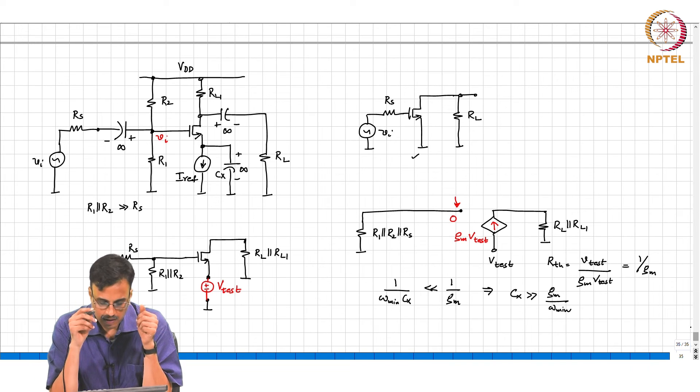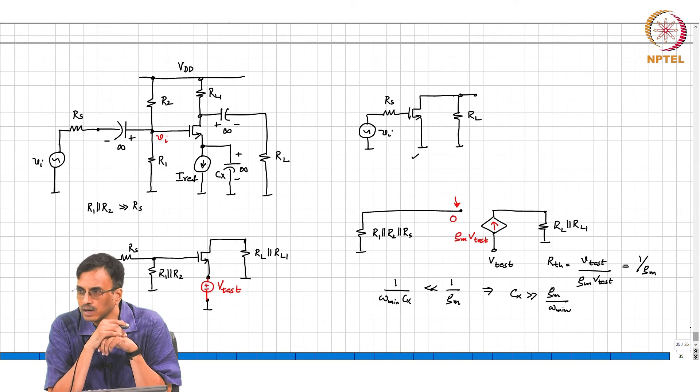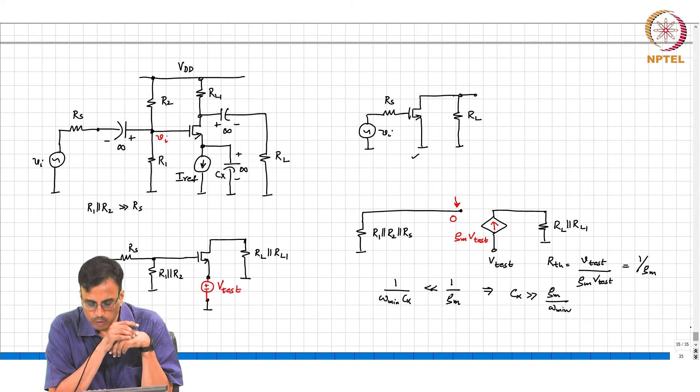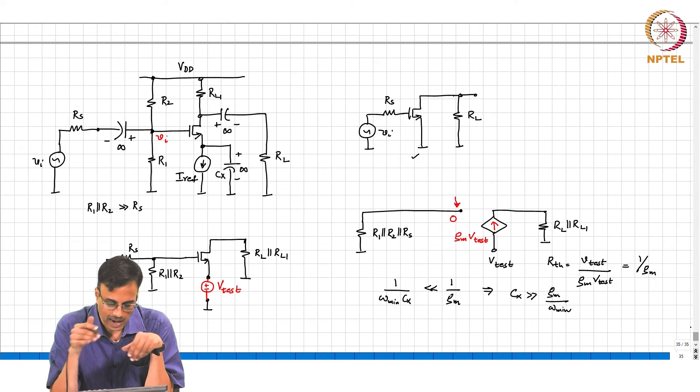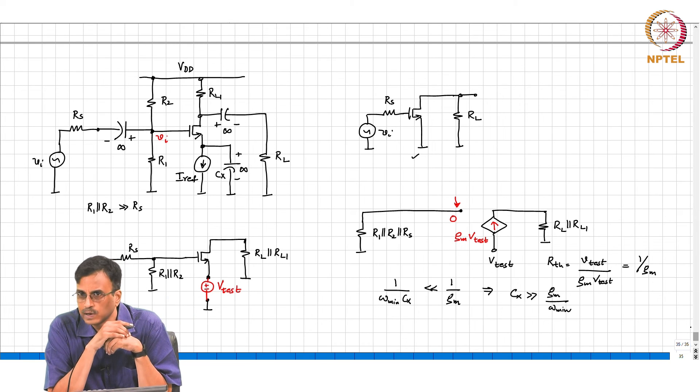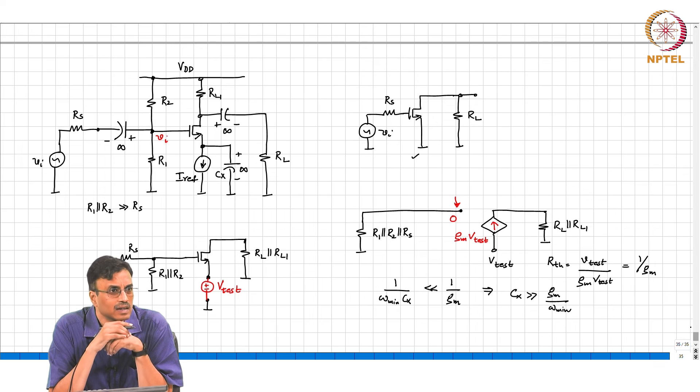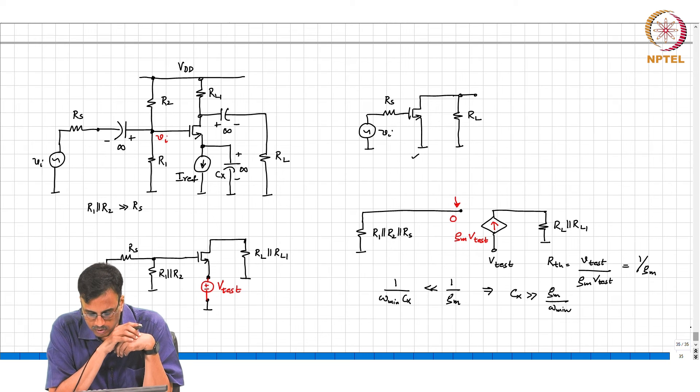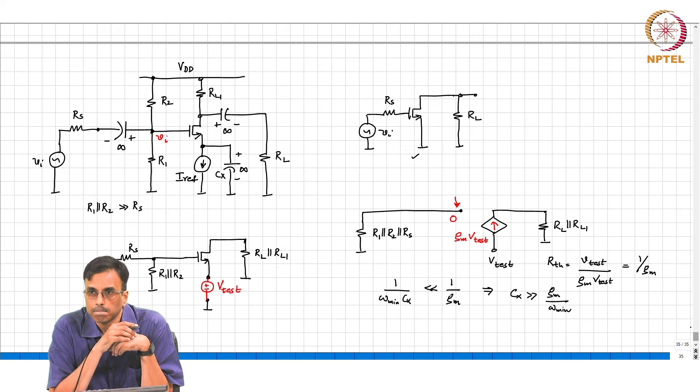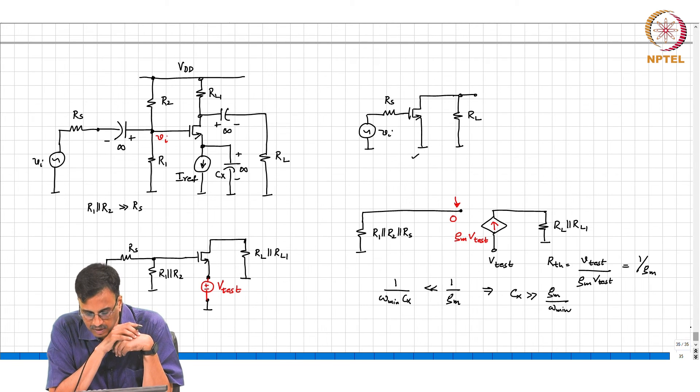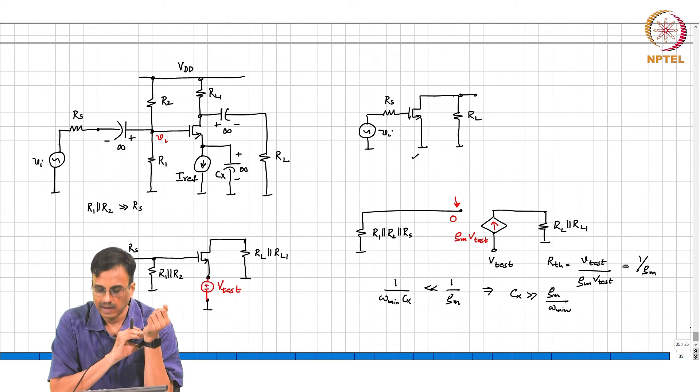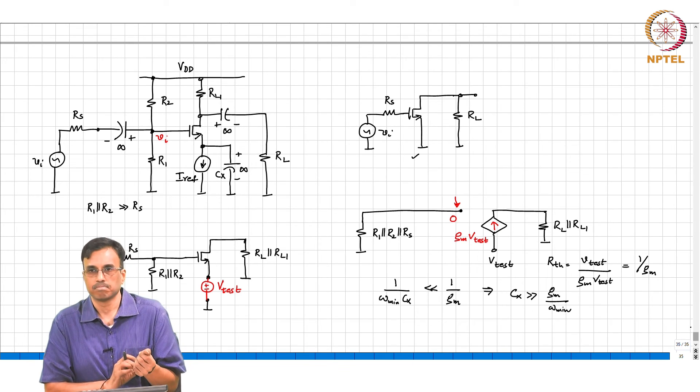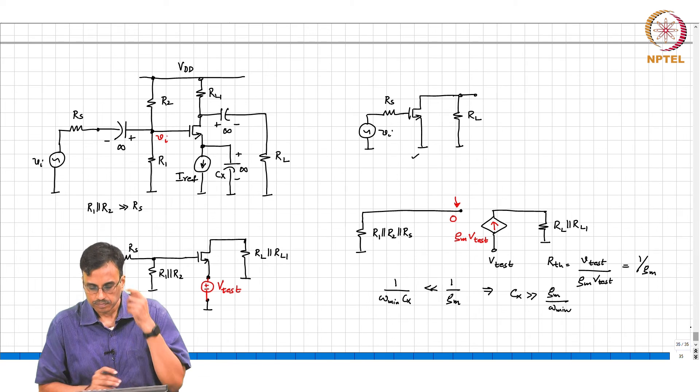This is yet another common source amplifier. If you put the earlier circuits that we had and compare it with this, on the face of it, it looks as if this is a completely different circuit. The connections are different, there are all sorts of components, there is no current source. But there is basically a big difference. I mean, as far as the incremental picture is concerned, the underlying circuit is still the same.